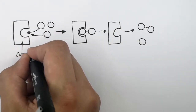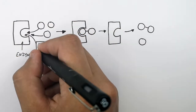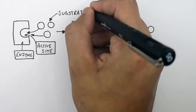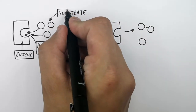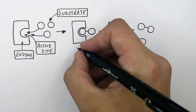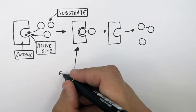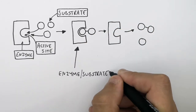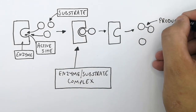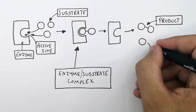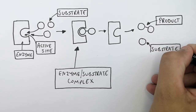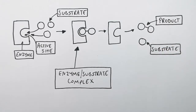This is the enzyme and this is the active site of the enzyme. These are the substrate molecules that bind the active site of the enzyme, which then form the enzyme-substrate complex. This here is the product — what is made. This other molecule is still the substrate because it hasn't been changed into a different product.